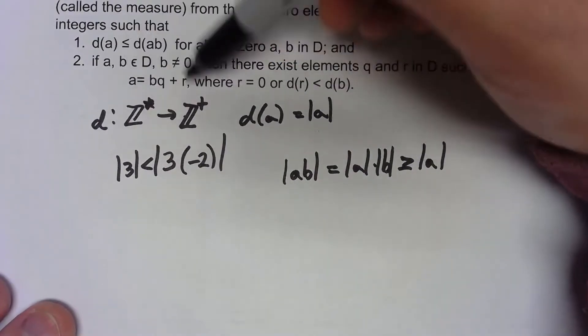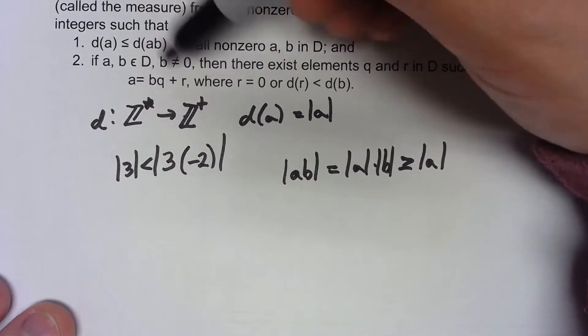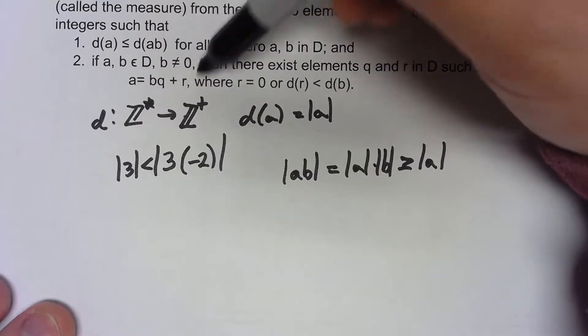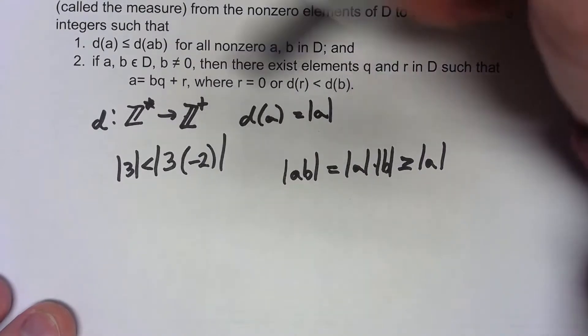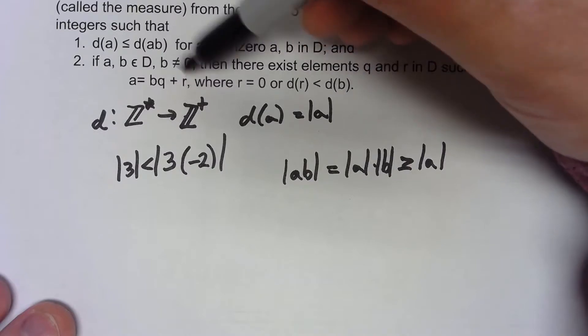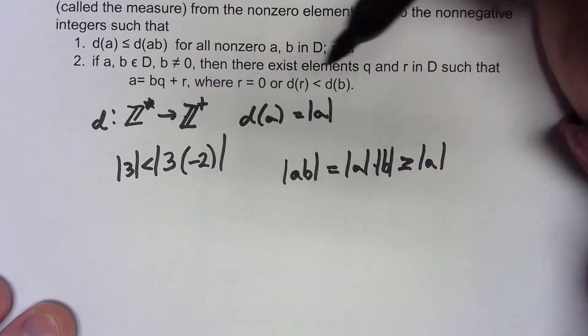Also again we've got long division type things so we know we can do this division algorithm, we know we can create this quotient and remainder for anything.